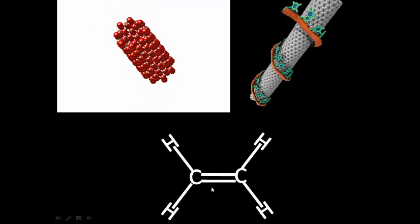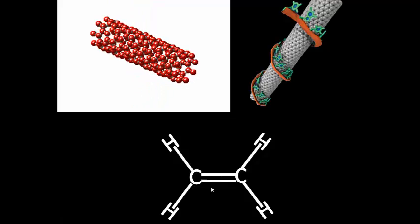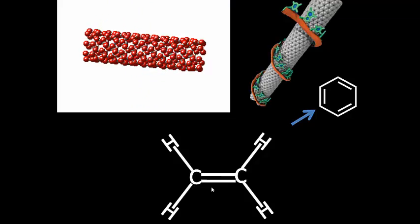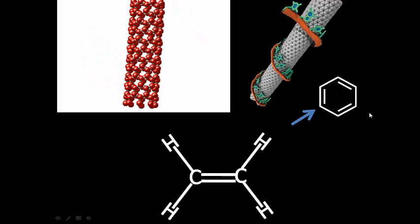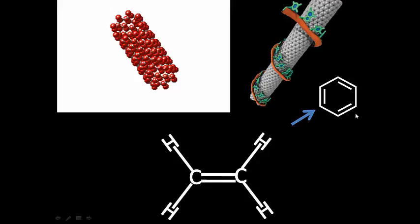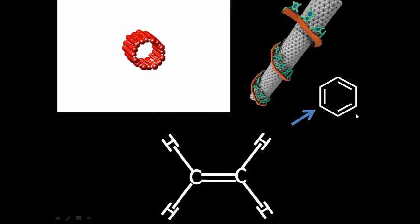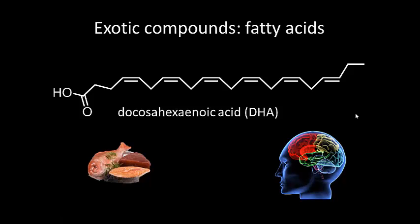Those multiple bonds can even form rings like benzene that you see here. Even fatty acids and all types of exotic compounds have carbon as the backbone. This is an example of DHA —